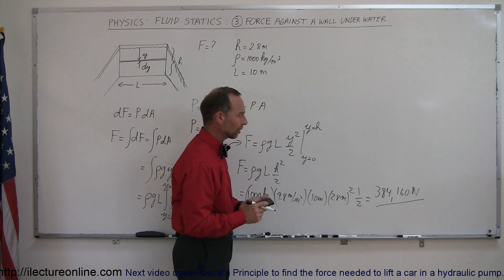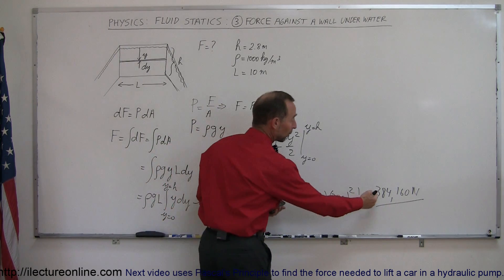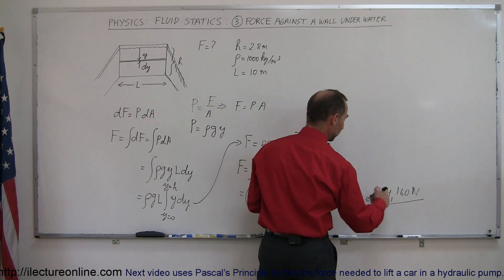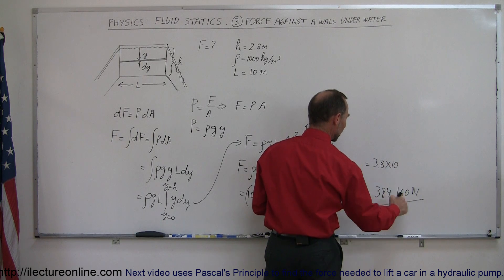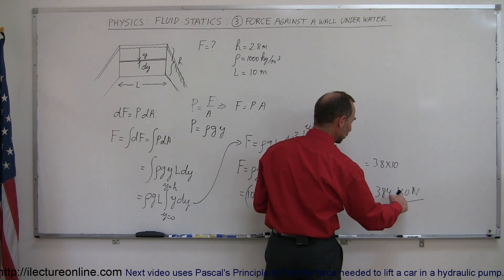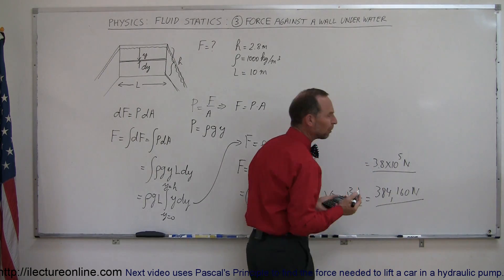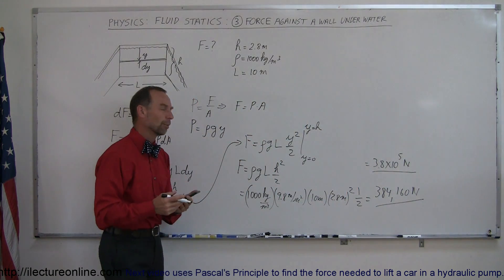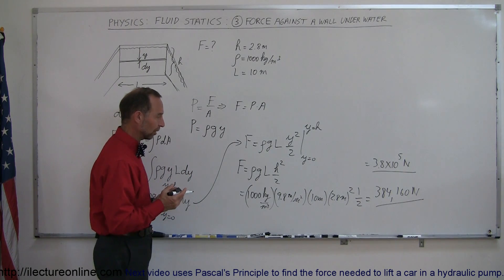Now of course, those are not the correct number of significant figures, since I gave you numbers with only two significant figures. We probably want to change that to scientific notation and write this as 3.8 times 10 to the 5th newtons, and that's probably a more appropriate number, considering the significant figures that we were using.